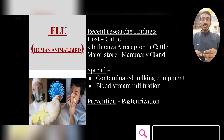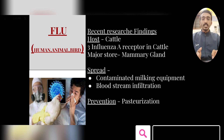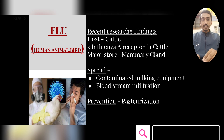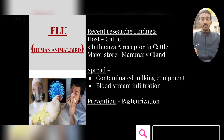Next is flu, a common condition caused by the influenza virus. Recent research findings show that cattle host around three influenza receptors that are also seen in humans, chickens, and ducks. The major storage area is the mammary gland — important because people drink milk, and if the virus is present in the mammary gland it can be transmitted through milk to humans. Spread also occurs through contaminated milking equipment, milk tubes, and bloodstream infiltration if mammary gland tissue is damaged.